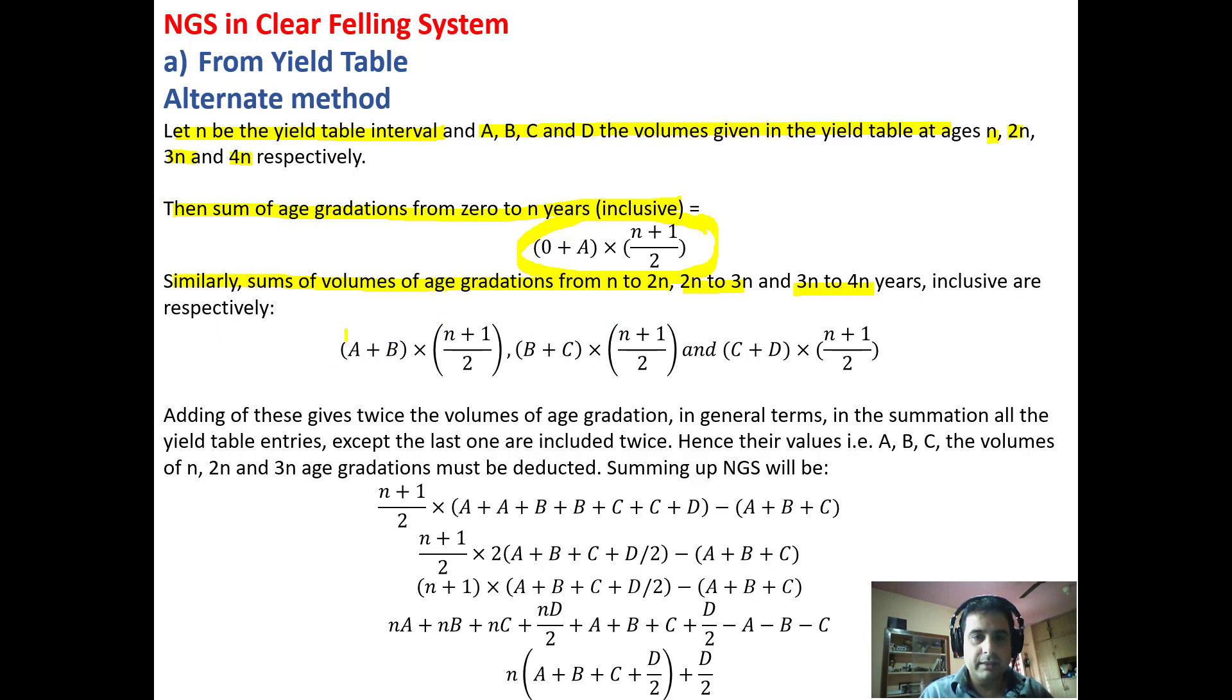From N to 2N, volume will be (A + B) × (N + 1)/2. Similarly, the volume from 2N to 3N will be (B + C) × (N + 1)/2. Then from 3N to 4N it will be (C + D) × (N + 1)/2.